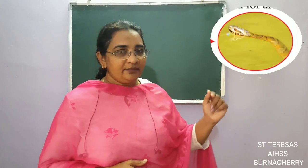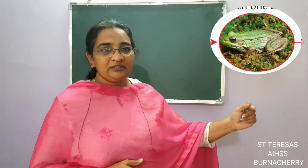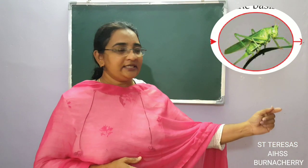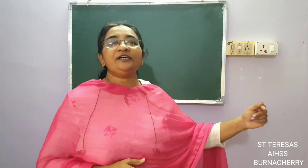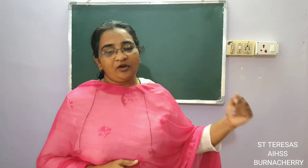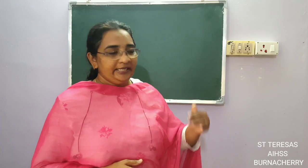The snake eats the frog, the frog eats the grasshopper, and the grasshopper eats plants — it grows like a chain. This is called a food chain. Each organism is connected to another on the basis of their food, and that is called a food chain.